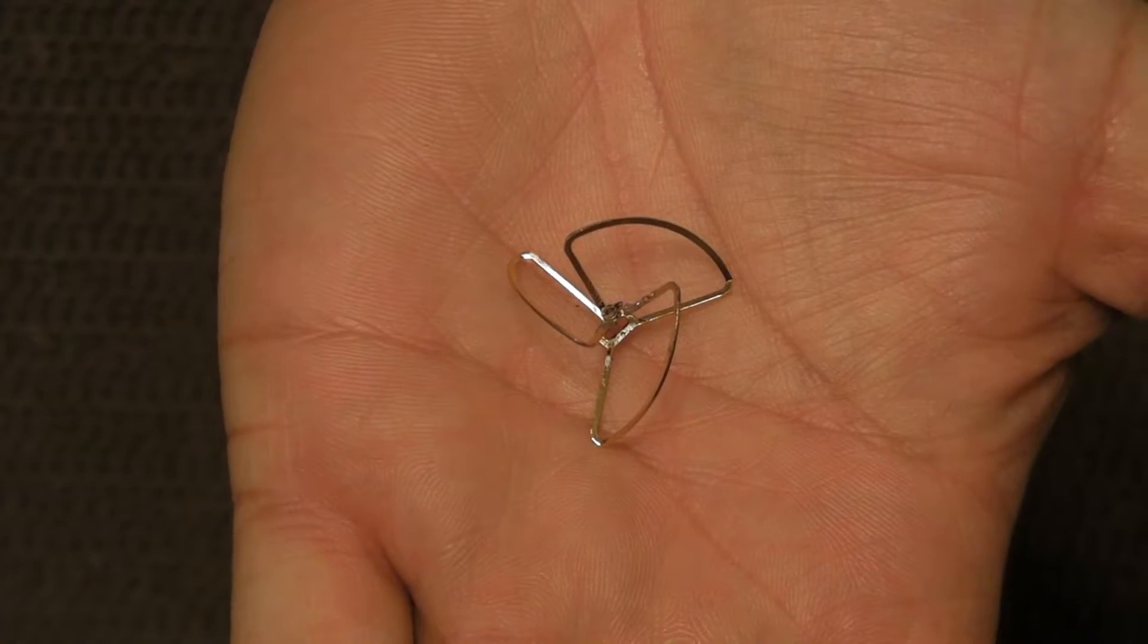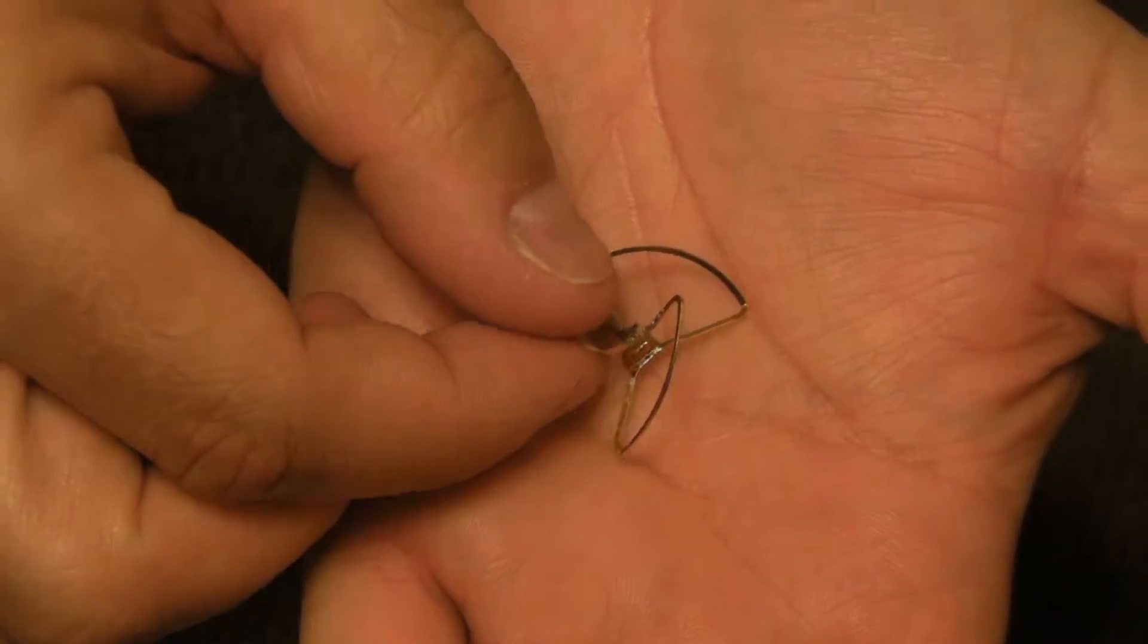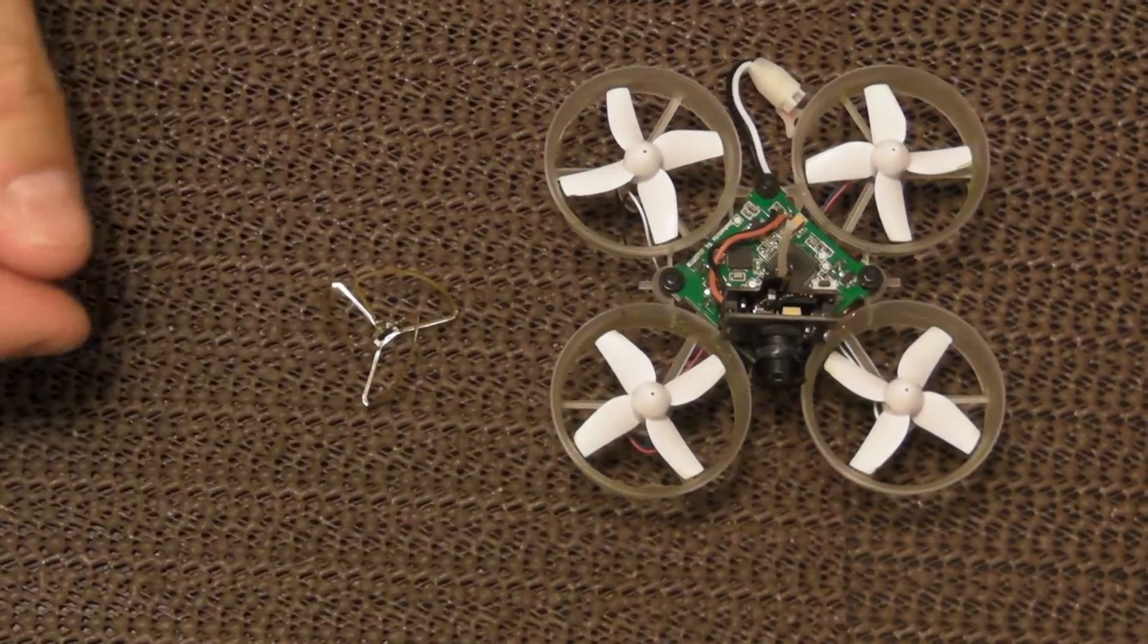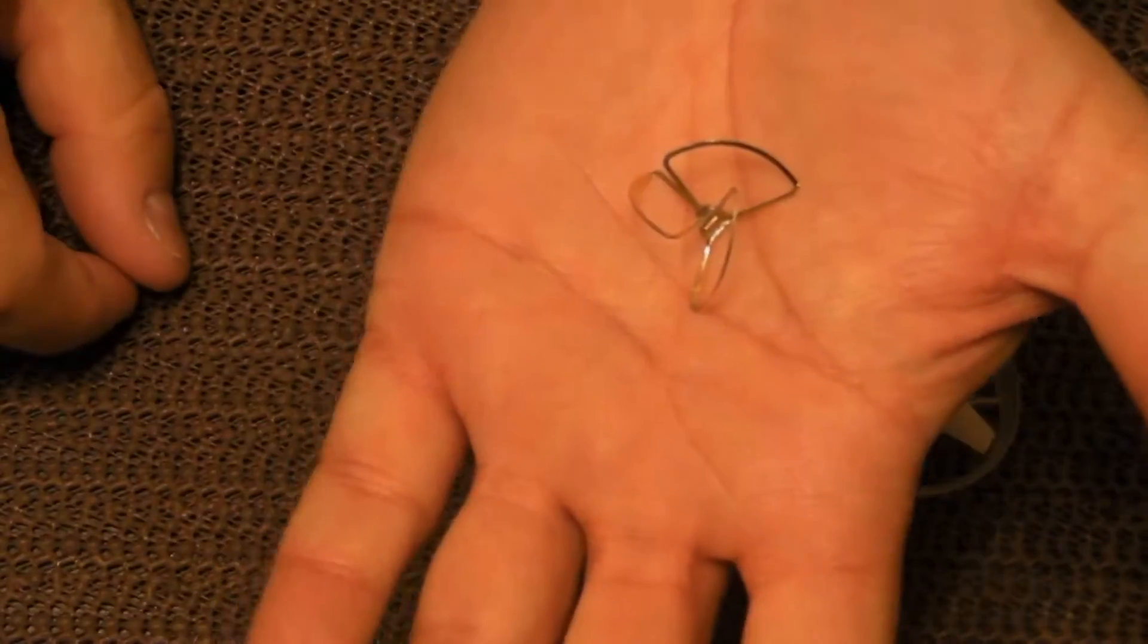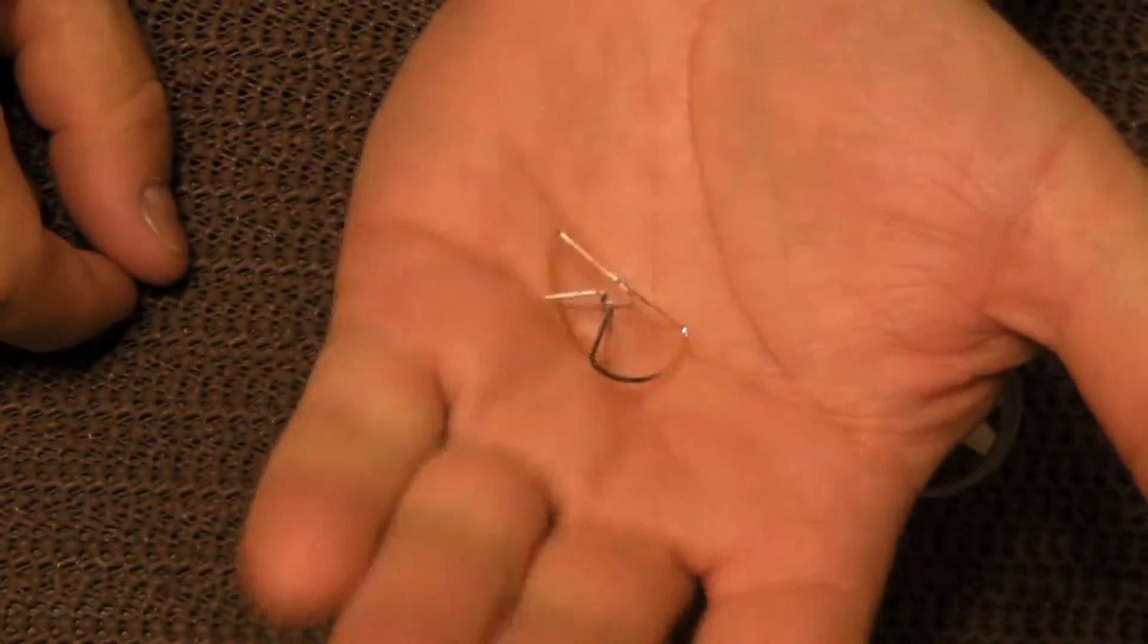This little FPV kit came with this cloverleaf antenna, a circular polarized antenna, and it's very delicate. To top it off, I never had that much luck with it. It just didn't work as well as I had hoped, especially compared to some of the other videos that I saw.